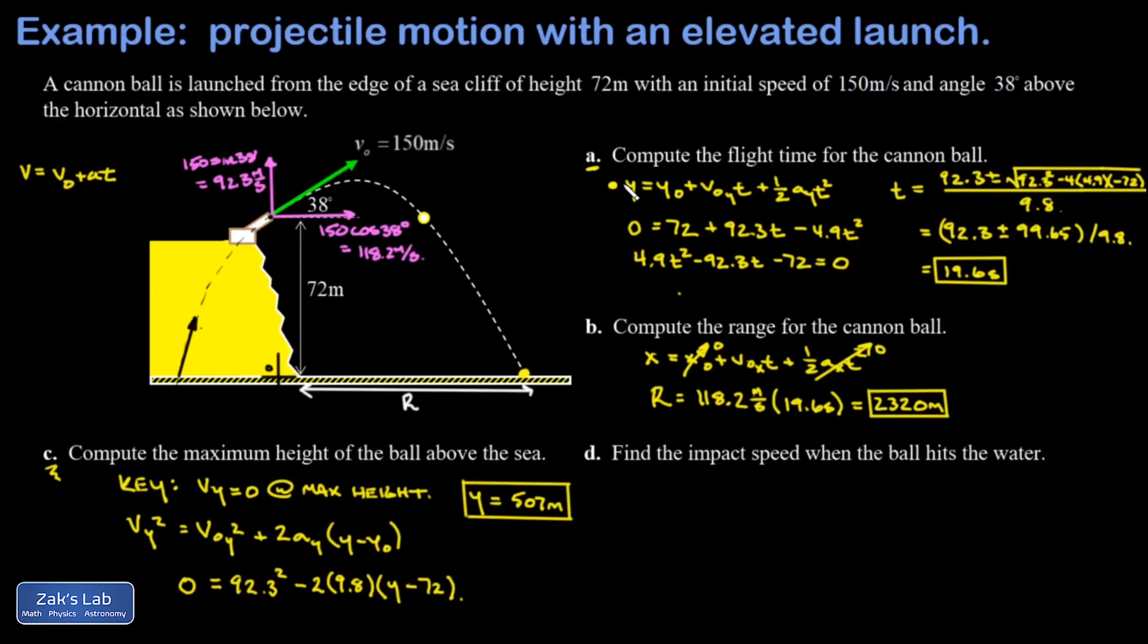In part d we're asked for the impact speed when the ball hits the water. This has to be done by components. There is a sneaky way to do this using the concept of gravitational potential energy, but we don't have that yet at this point in the course, so I'm going to get into the details of the velocity components when the cannonball strikes the surface of the water.